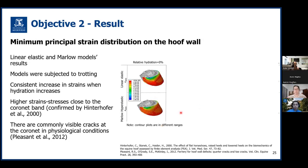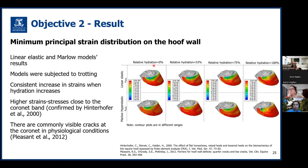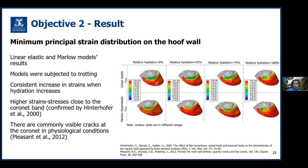This figure shows the minimum principal strain distribution on the hoof wall surface for the linear elastic and Marlow model, subjected to trotting at 0% hydration level, and results for other hydration levels. Both models demonstrated a consistent increase in minimum principal strains when hydration increased. In both models, there are higher strains and consequently higher stress in the proximal regions of the hoof wall and close to the coronet. This observation was confirmed by previous FE studies and may explain commonly visible cracks at the coronet in physiological conditions.